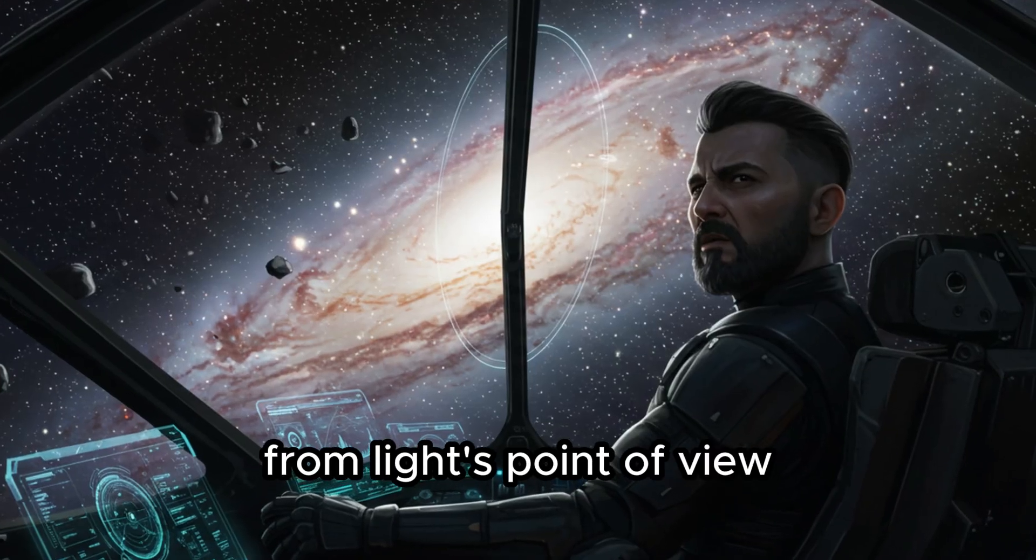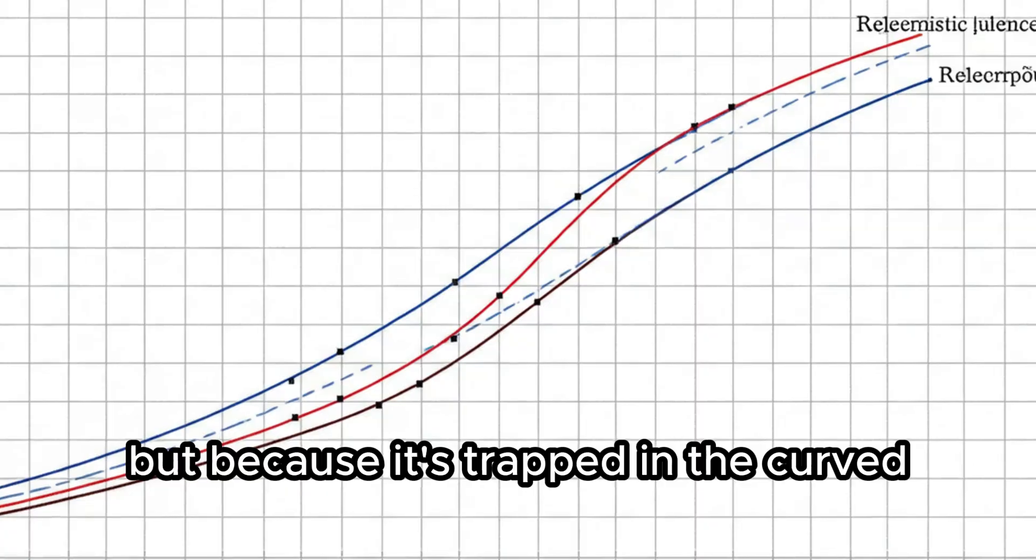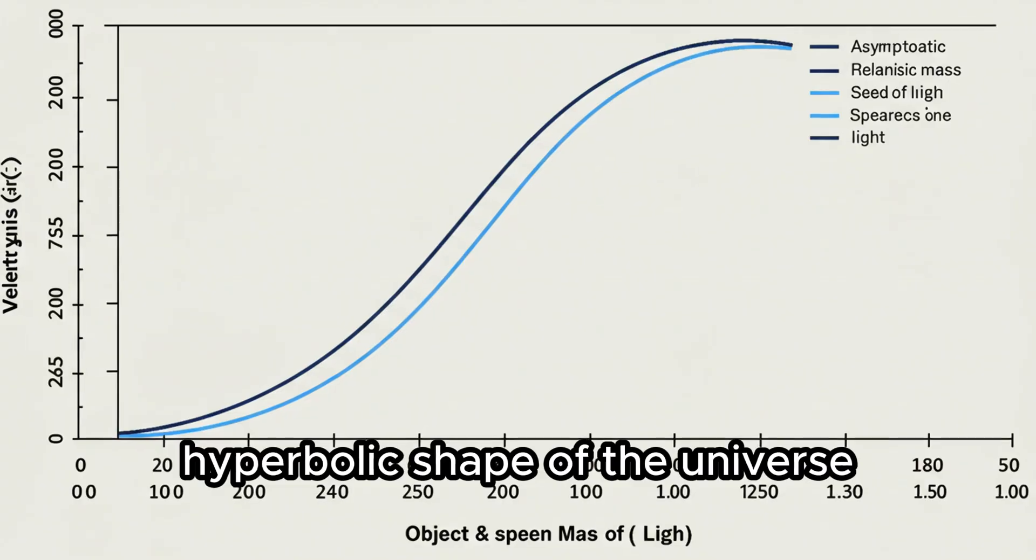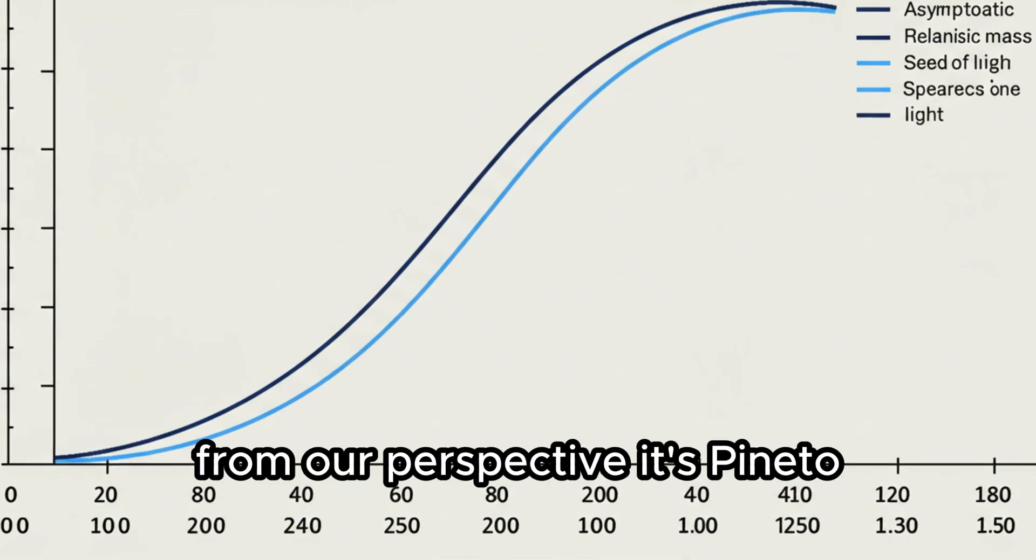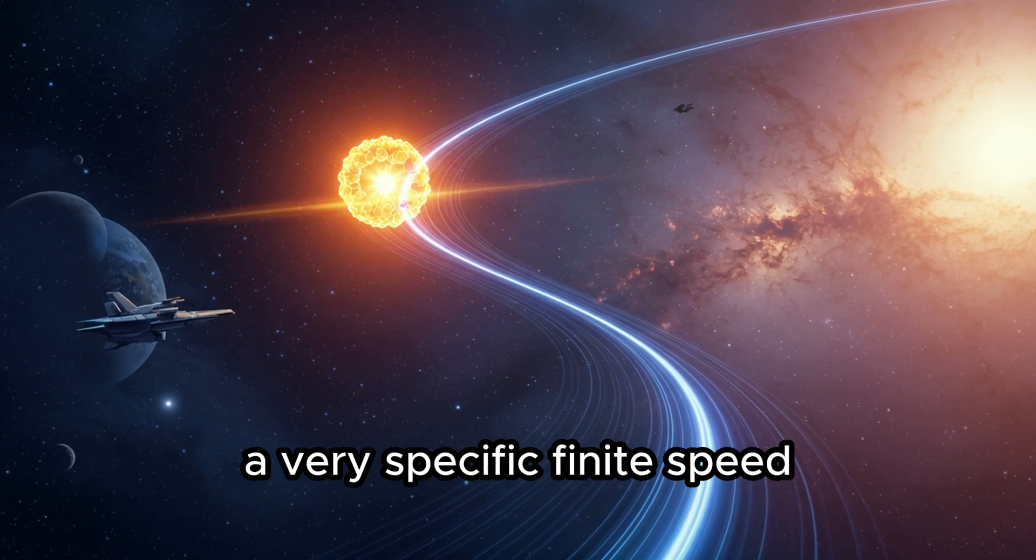This explains the paradox of the photon. From light's point of view, it covers all distances instantly. But because it's trapped in the curved, hyperbolic shape of the universe, from our perspective, it's pinned to a very specific, finite speed.